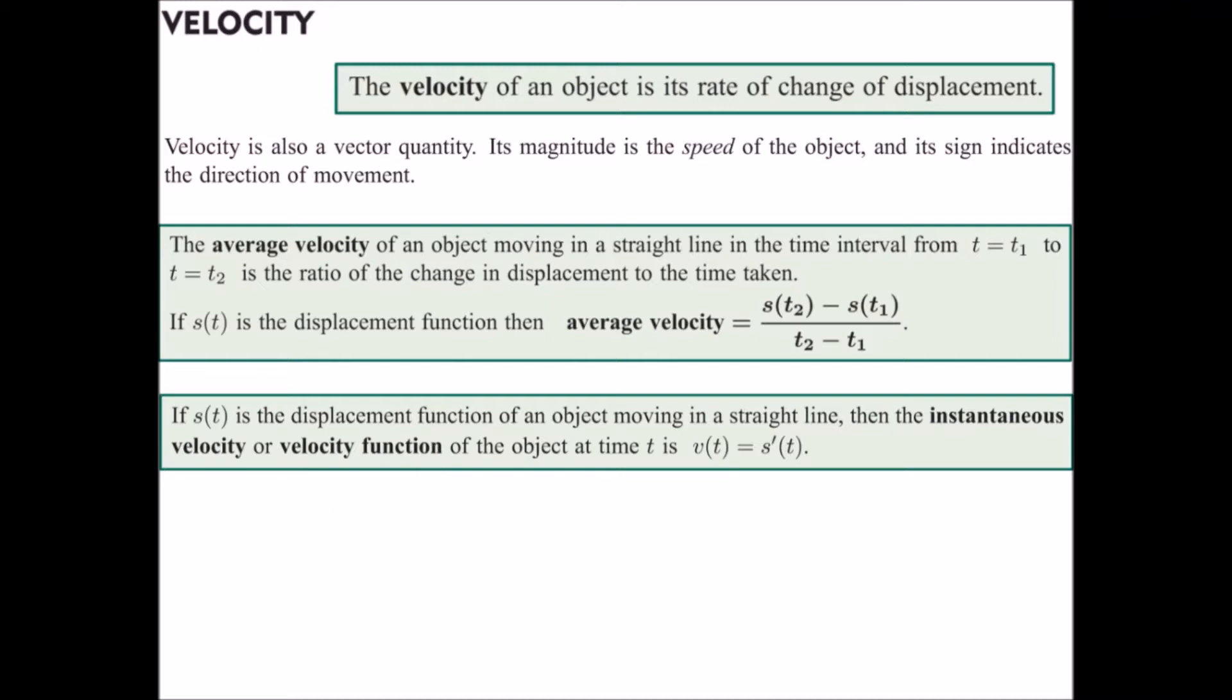So that was a look at displacement along a straight line. Now displacement, the change in displacement, so s(t2) take s(t1) divided by the change in time, is in fact the average velocity. The instantaneous velocity therefore would be the derivative of displacement. If we work out the limit as the gap between my points approaches 0 for this function here, we end up with our s'(t). So velocity is the derivative of displacement.